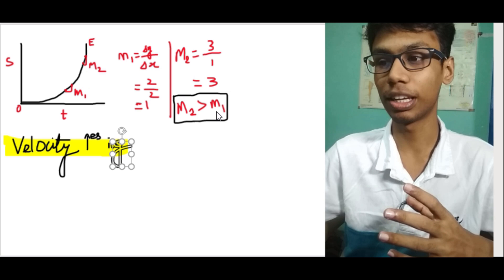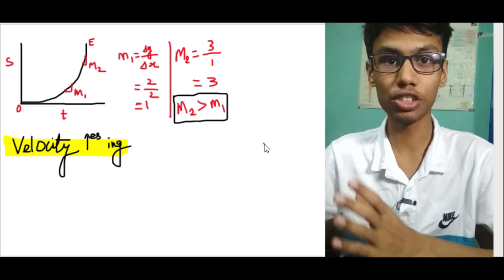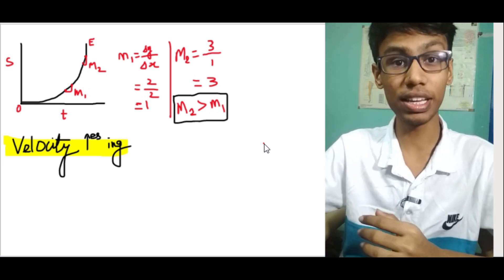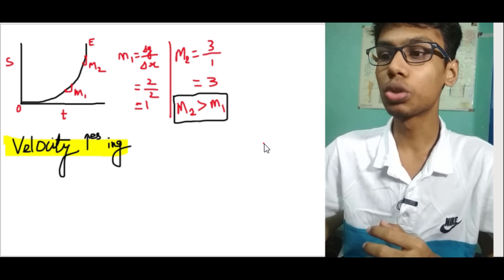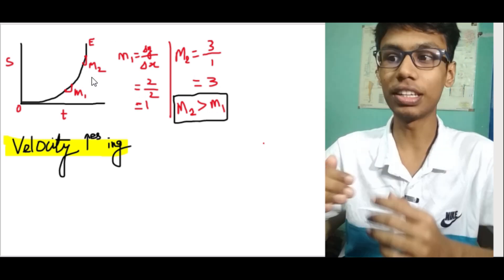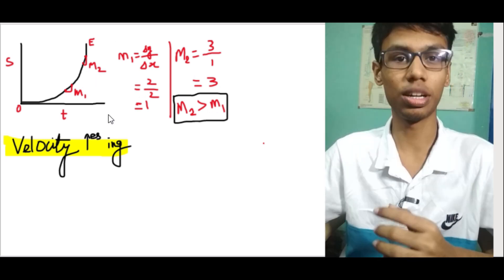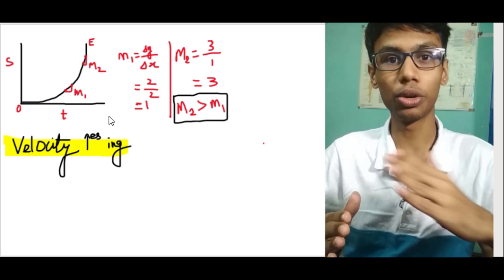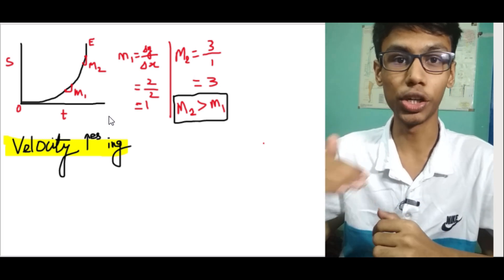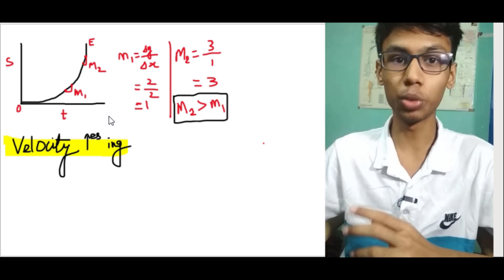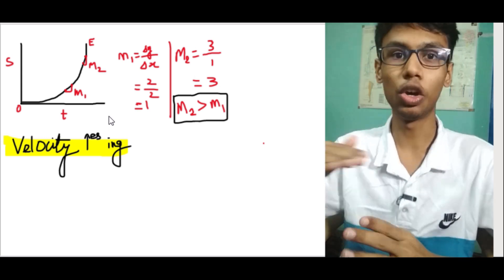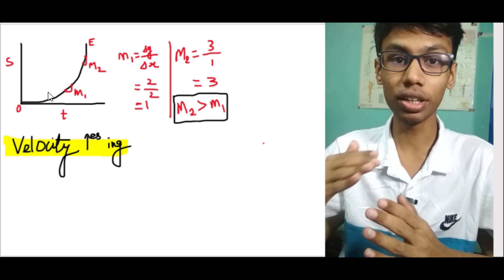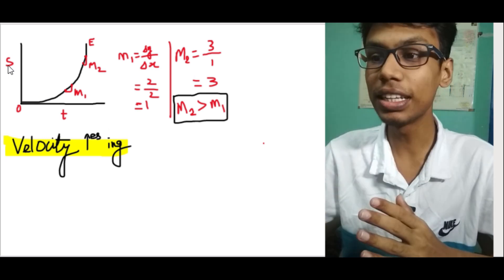So M2 is greater than M1 — the slope is increasing. Since in a displacement-time graph the slope equals velocity, in this OE curve velocity goes on increasing. To summarize the displacement-time graph: straight line means constant velocity; parabolic OD means velocity decreasing; parabolic OE means velocity increasing.